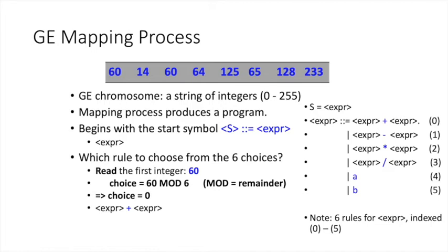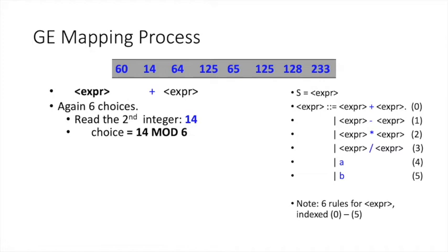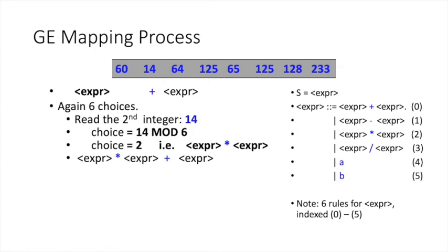Previously we had one expra, and now we have two. As a principle, GE picks the leftmost non-terminal, so we resolve the left expra first. Again we have six choices, and we read the second integer, which is 14. We compute 14 mod 6, which produces 2, corresponding to expra times expra. We replace the leftmost expra with expra times expra, and then add another expra — so we started with one expra and now we have three.